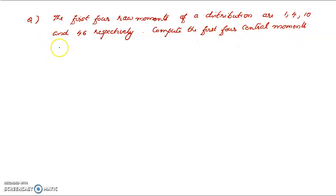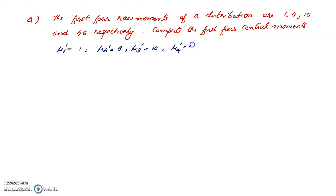We have the first four raw moments: mu1 dash is equal to 1, mu2 dash is equal to 4, mu3 dash is equal to 10, and mu4 dash is equal to 46. Now we compute the first four central moments. mu1 is always 0.